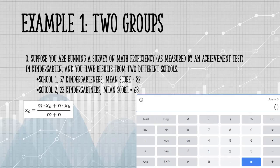M is the number in the first group, that's 57. I'm going to multiply that by the mean score, which is 82. Then we're going to add 23, that's the number of items in the second group, multiplied by the mean of the second group at 63.